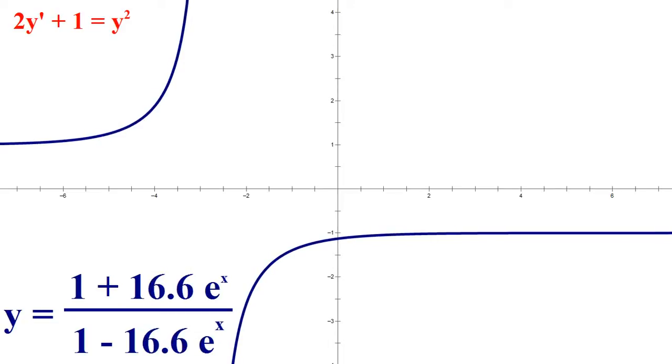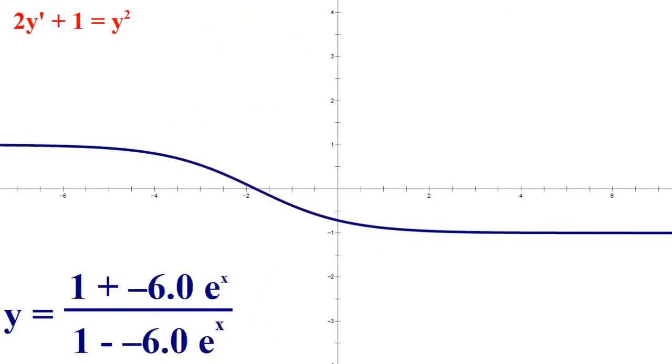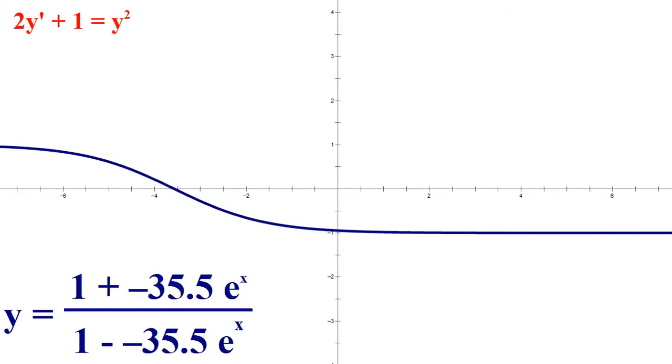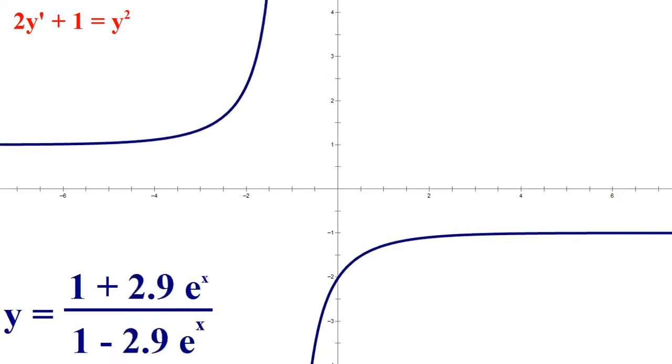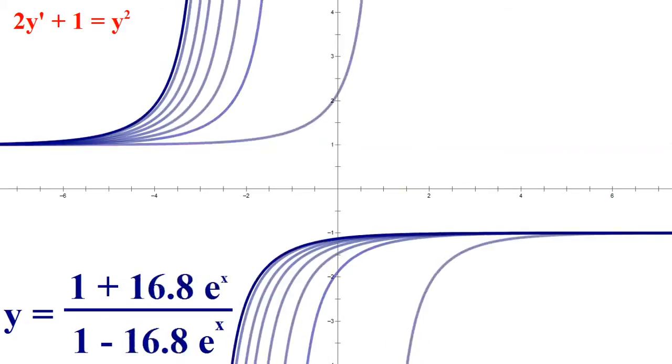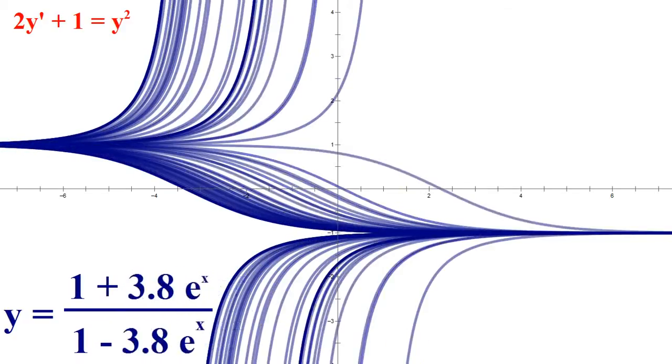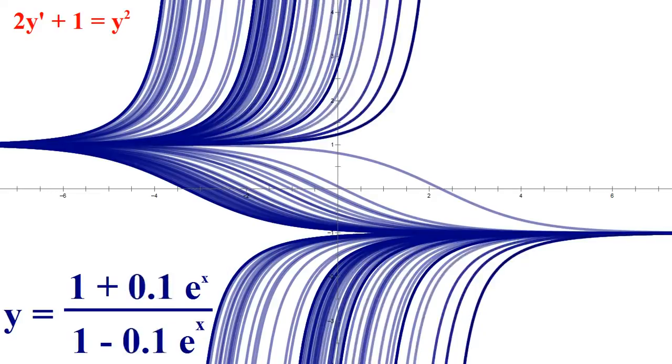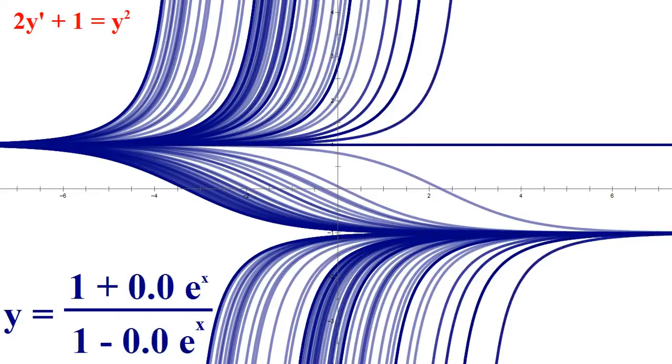And we also saw the graph look something like this. This is one possible solution when c is 8.2. But any possible c would have worked. When c was positive, you basically have solutions that look like this. When c is negative, you have solutions that kind of look like this. And when c is exactly zero, you get a solution that looks like this. These are all the possible solutions.